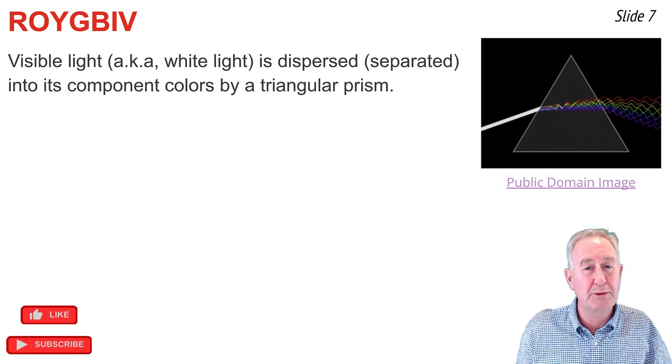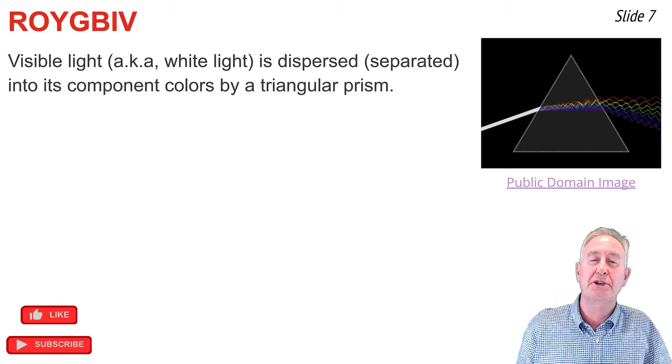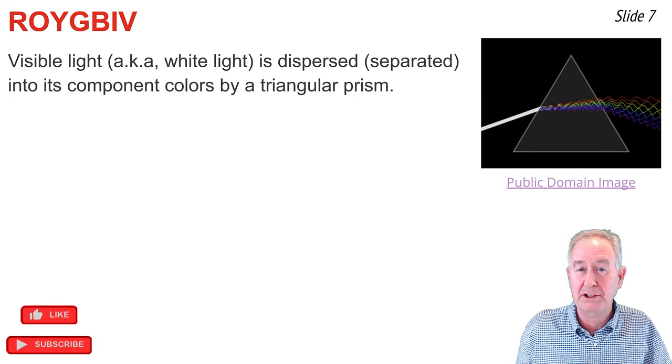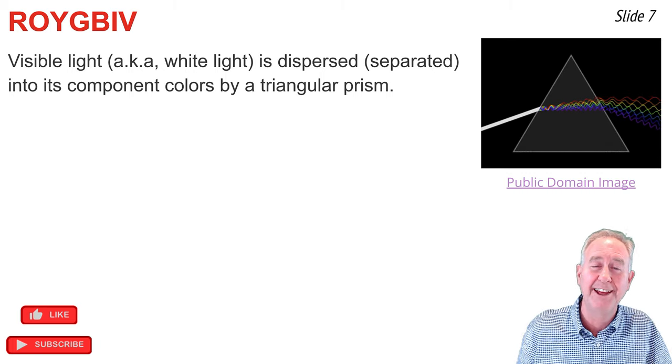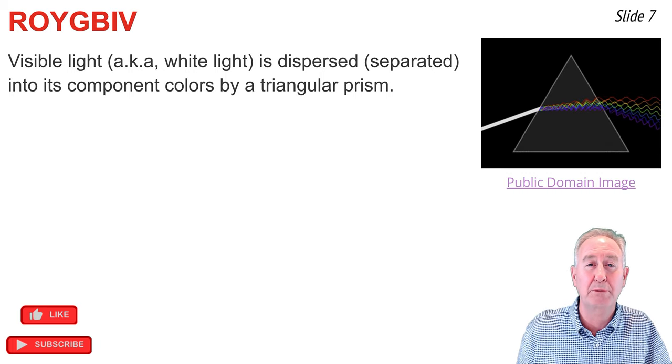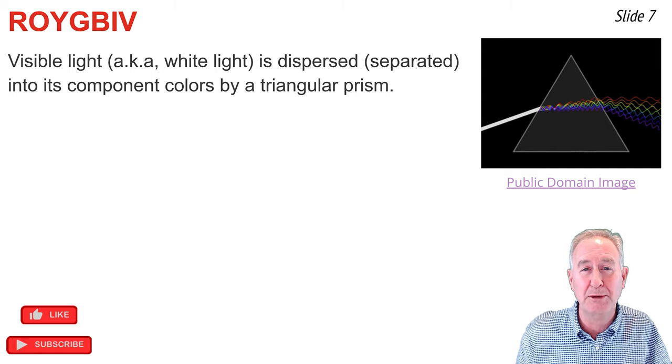We often refer to visible light as white light, since the presence of all the wavelengths of the visible light spectrum is perceived by our eye to be white. If we pass white light through a triangular prism, as shown in the animation above, the white light will be dispersed or separated out into its individual colors.